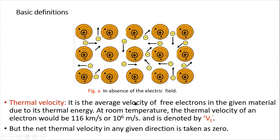Now we will try to understand what is thermal velocity. The metal consists of positively charged ion cores, and the valence electrons are loosely bound and free to move within the metal. These free electrons have gained velocity because of the temperature of the metal, and this velocity is called thermal velocity. Thermal velocity is the average velocity of free electrons in a given material due to its thermal energy. At room temperature, the thermal velocity of an electron would be 116 km per second, or 10 to the power of 6 meters per second, and is denoted by Vt.